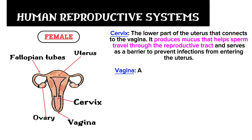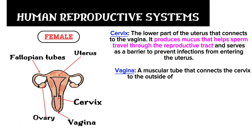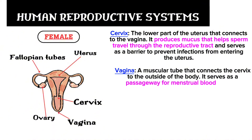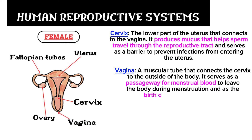The vagina is a muscular tube that connects the cervix to the outside of the body. It serves as a passageway for menstrual blood to leave the body during menstruation and as the birth canal during childbirth. The vagina can also be known as the birth canal.